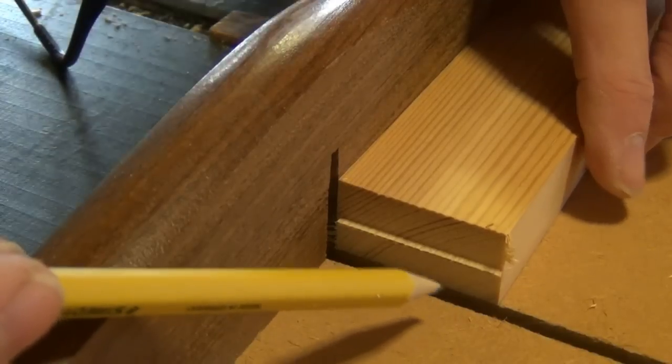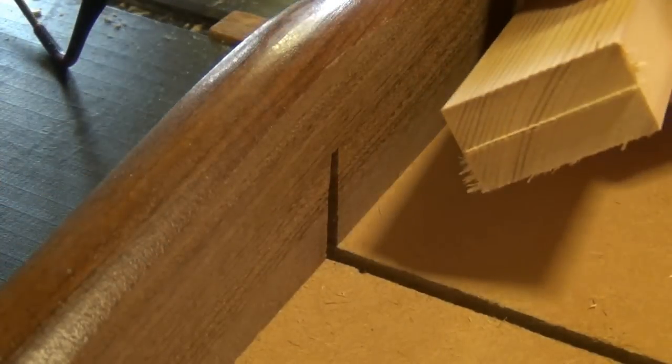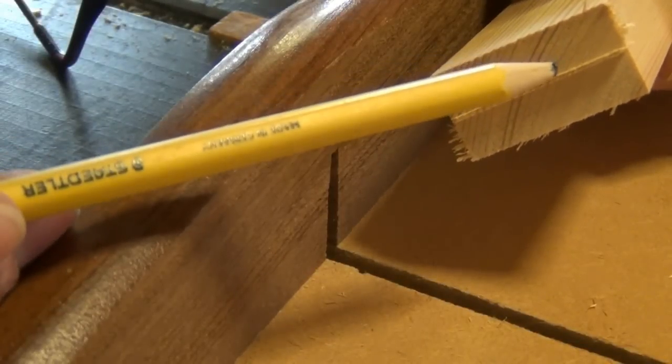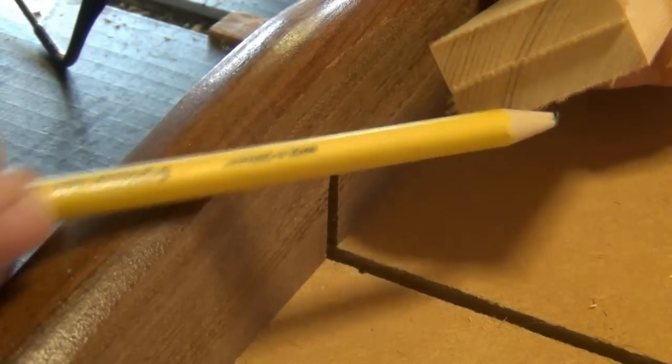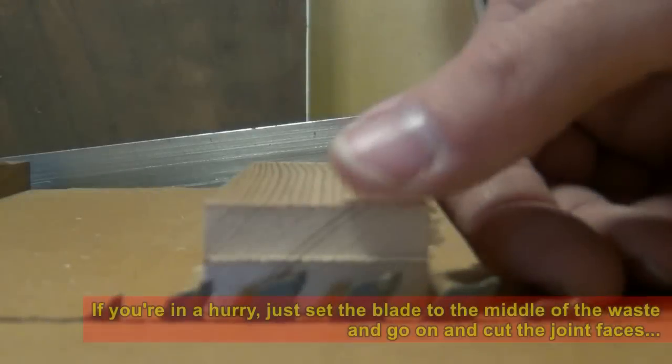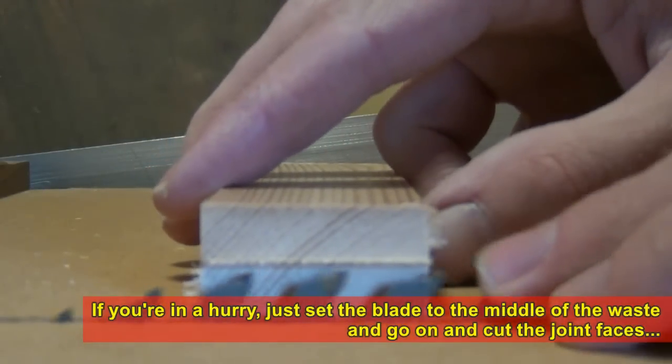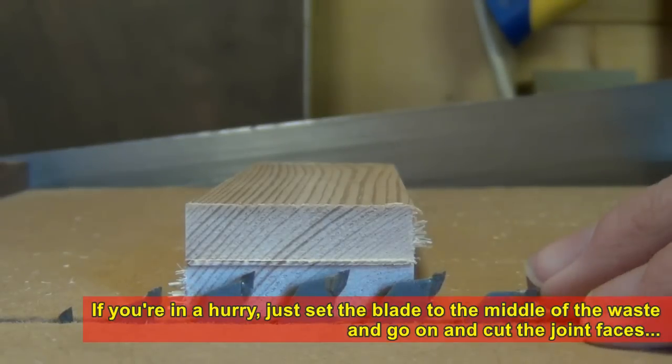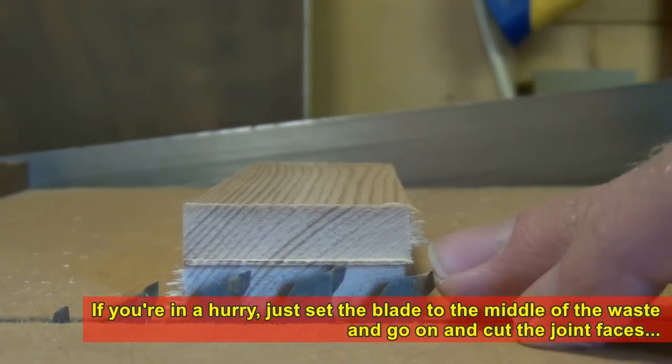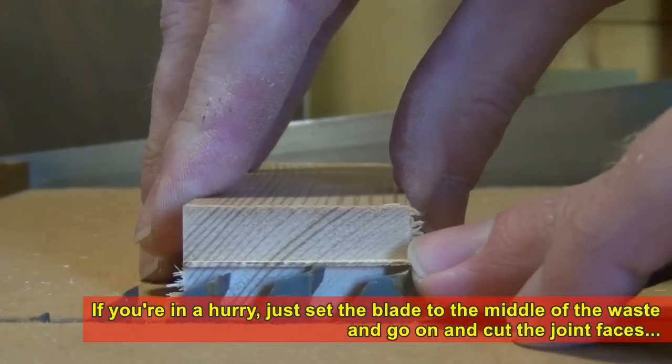Now you can see we've left behind a little piece of wood right in the middle of the component. We know it's right in the middle because we've cut from both sides. Find the highest point the teeth will go on the blade and raise your saw. Set it to the middle of the waste material that you left behind.